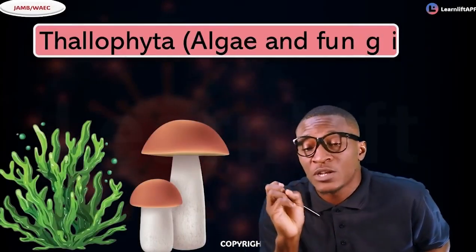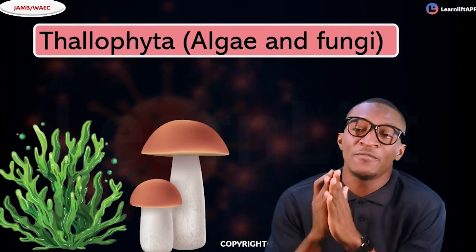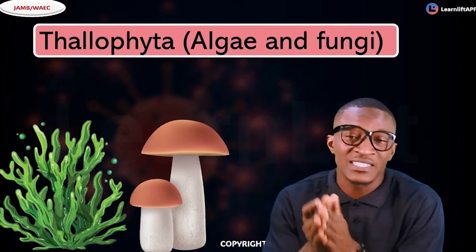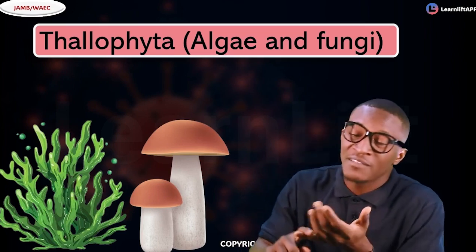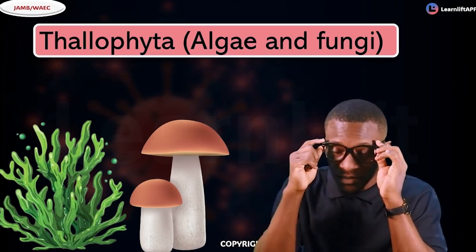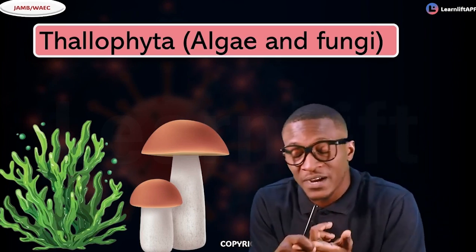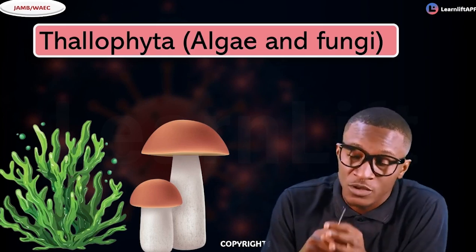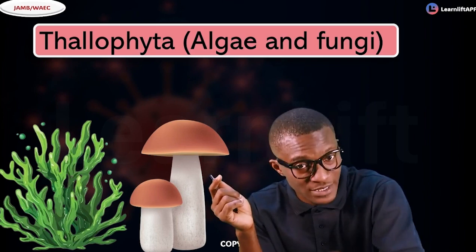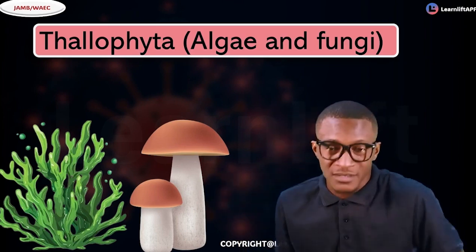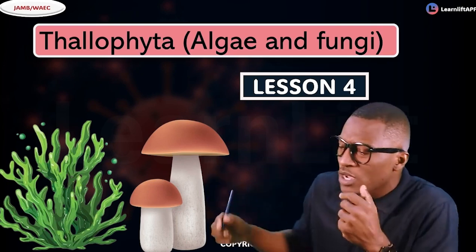In this class, let's talk about your thallophytes, which are your algae and your fungi. Don't forget that in this series we classified plants based on botanical classification. We have Schizophyta, which are the bacteria. When we talk about thallophytes — your algae and fungi — we also have Bryophyta, Pteridophyta, and Spermatophyta. We talked about Schizophyta in the first class. This is lesson four, where we're going to talk about thallophytes.